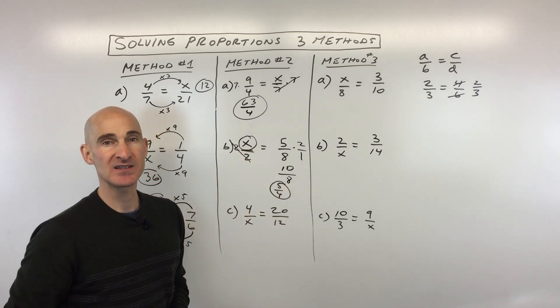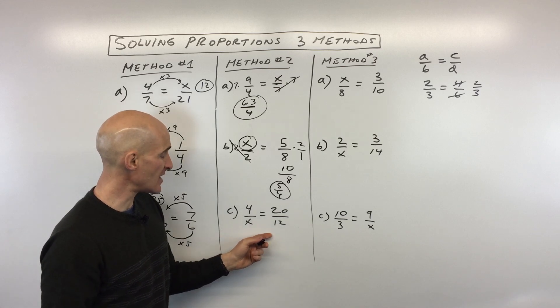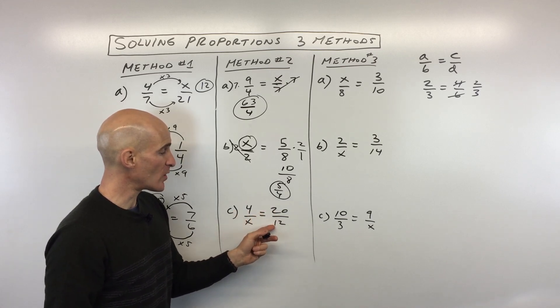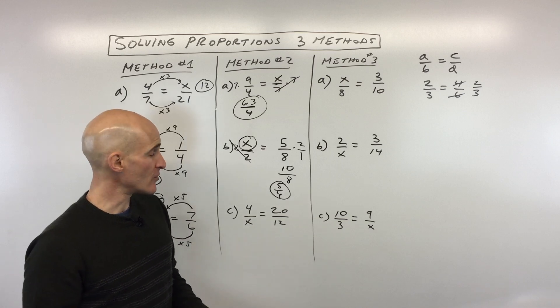That's going to give us 5/4. Okay, so that's x in this example. Okay, last example, this type, 4 divided by x equals 20 divided by 12. Okay, now this is a little bit different problem.